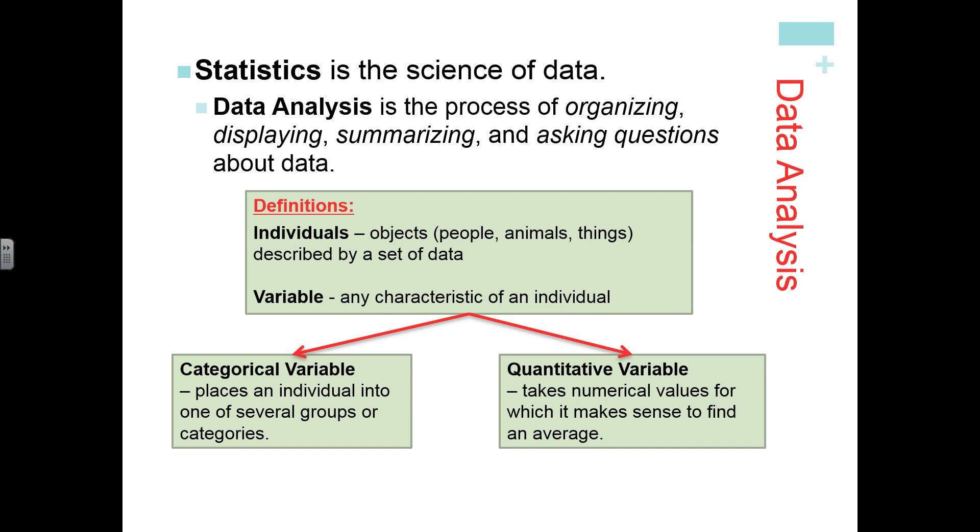A zip code places people in different locations by that number, so it's actually placing them into categories. For instance, the zip code of Allatoona is 30101, so that's placing us in this area by the zip code. That's categorical. Don't be confused when you see a number and think that it's automatically quantitative. It can also be categorical.